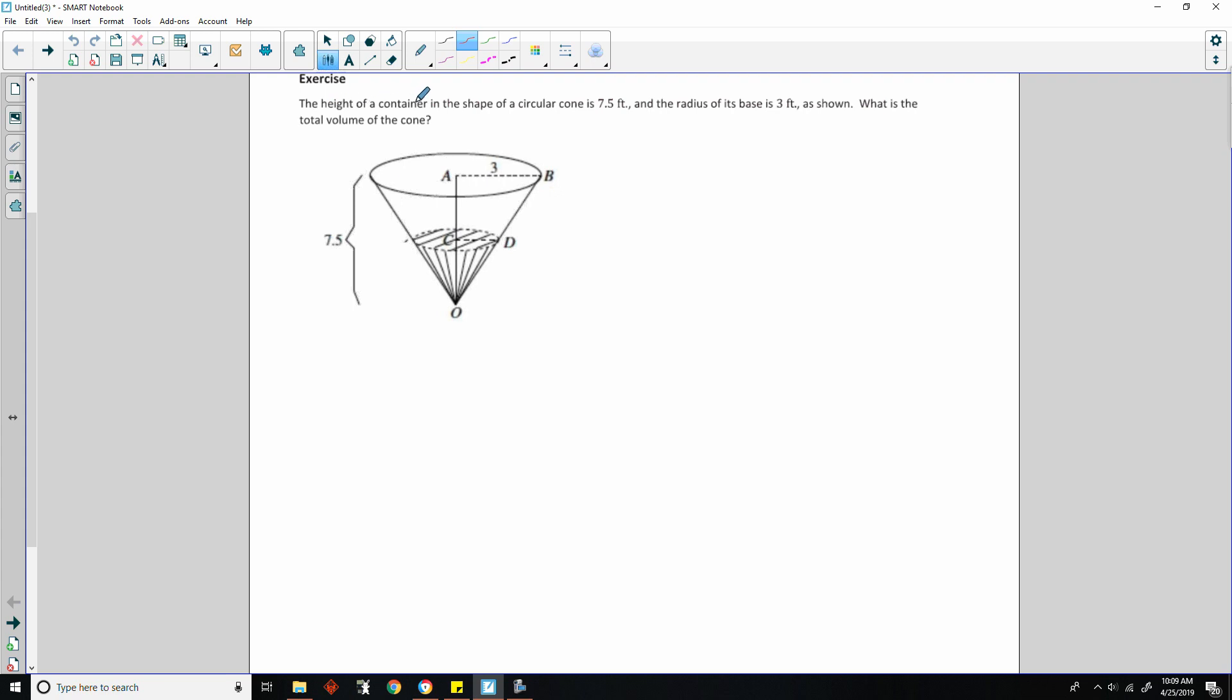The height of a container in the shape of a circular cone is 7.5 feet, and the radius of its base is 3 feet, as shown. What is the total volume of the cone? Alright, so what do we do? Step one, write a formula. Volume equals base area times height divided by 3, or 1 third pi r squared times height.